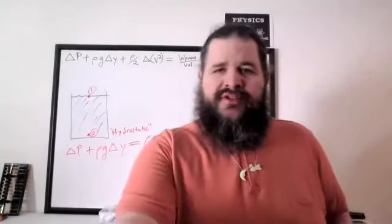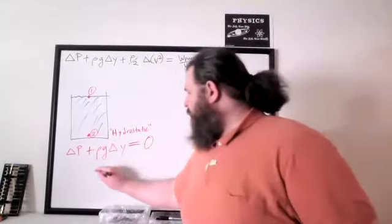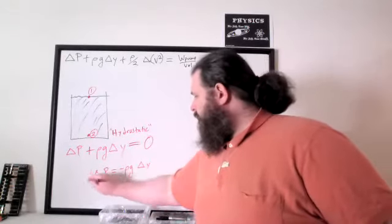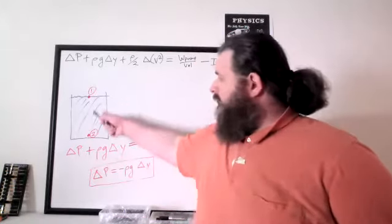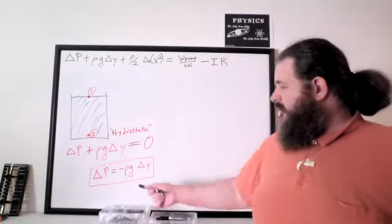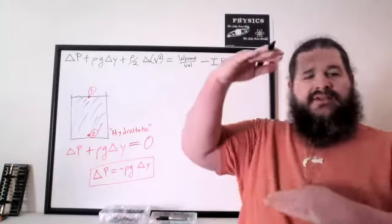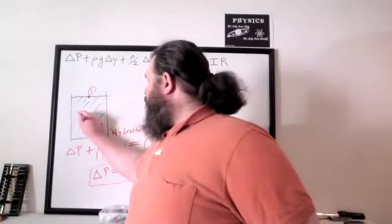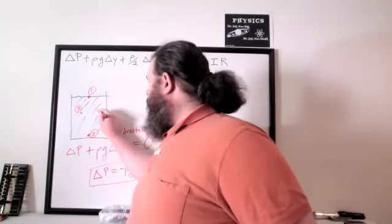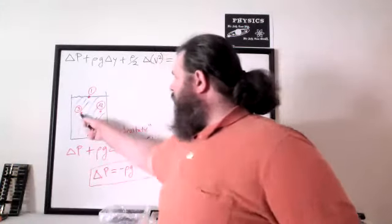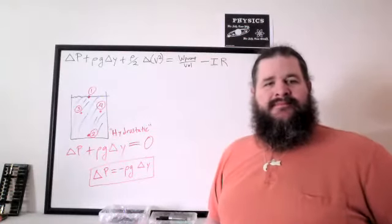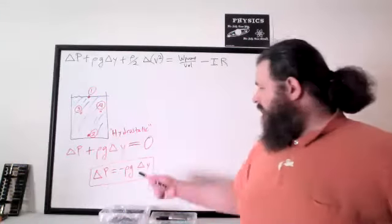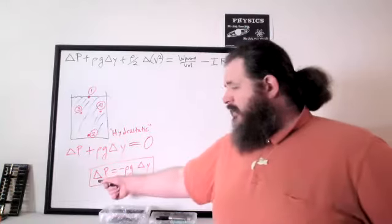The hydrostatic Bernoulli equation is the simplified version we get if the fluid is not moving. If you solve for delta pressure, you get delta pressure equals negative rho g delta y. In other words, the difference in pressure between two points is proportional to the difference in height. If you're comparing two points at the same height, their pressure is the same.